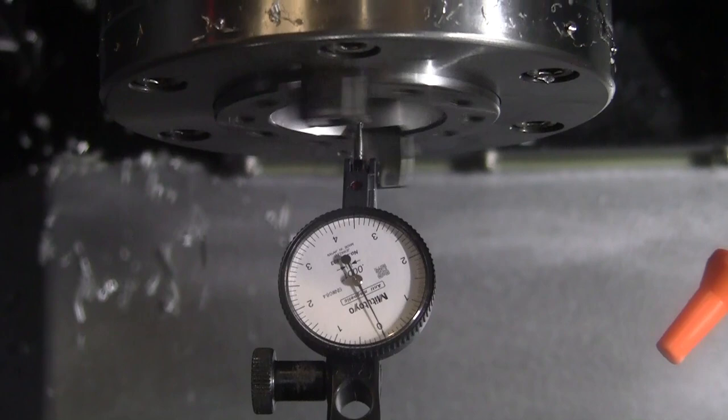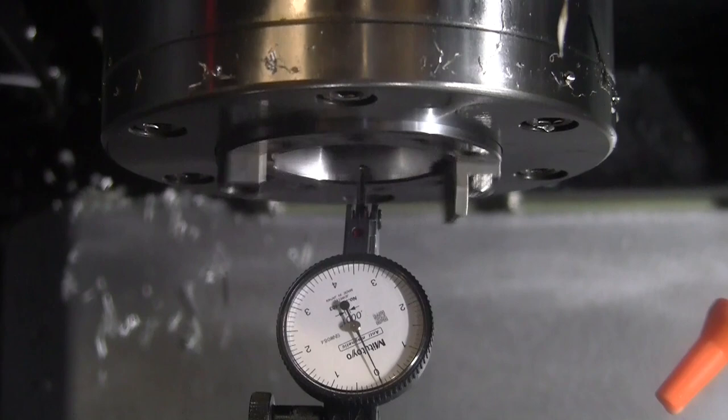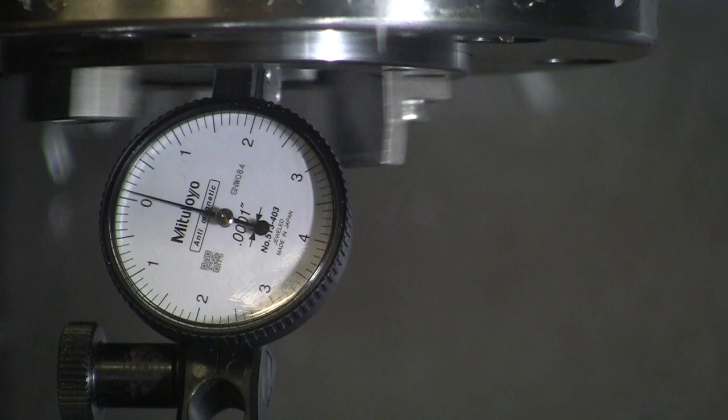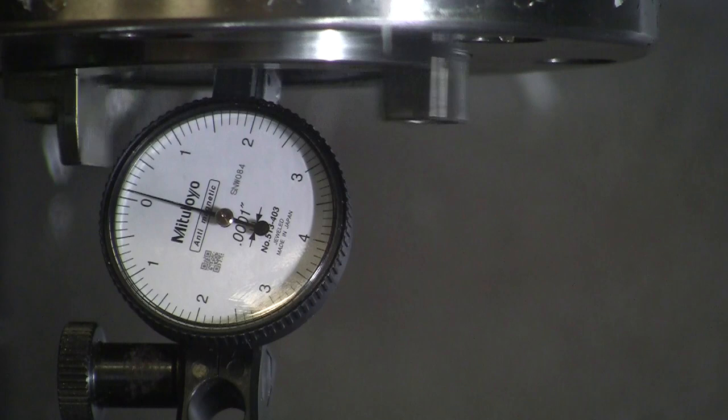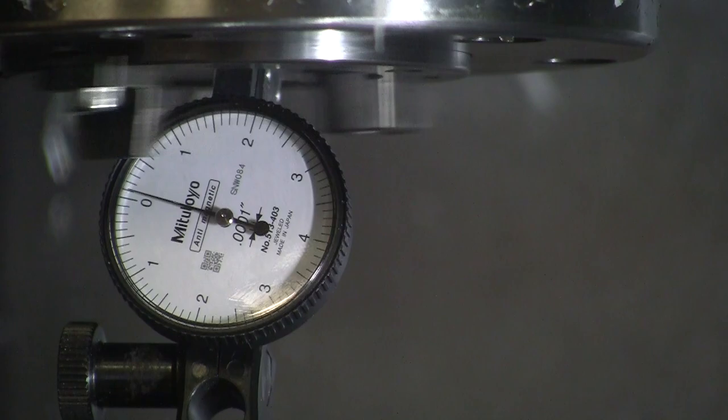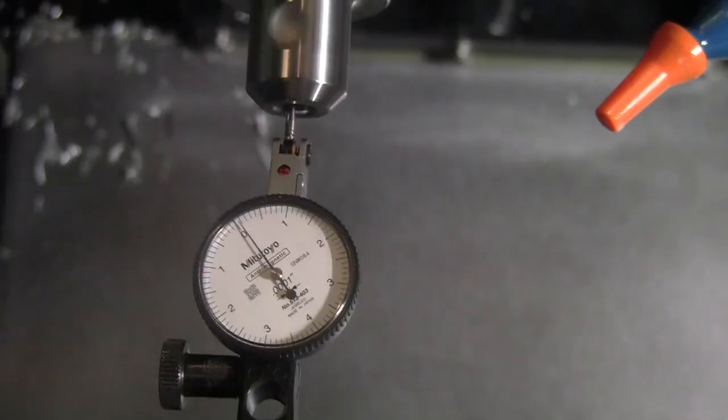And then the next thing we want to do is put the indicator up inside the spindle and measure the taper further up in. What this is going to do is check the axis of that taper to see if it's coaxial with the spindle bearings. And if they're running out, then all bets are off. We're never going to have a true running tool. So you can see we're getting very little motion, if any at all.